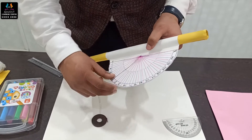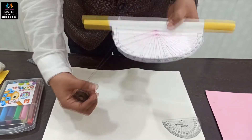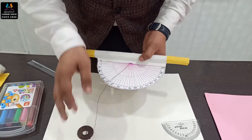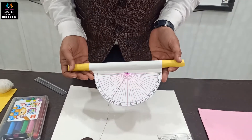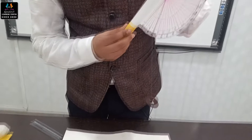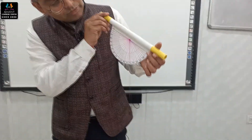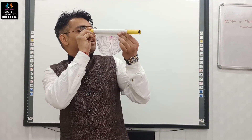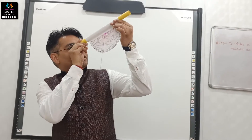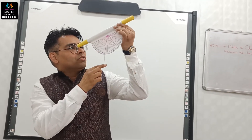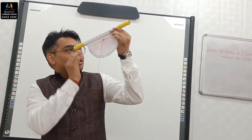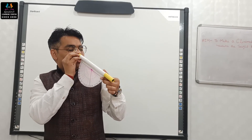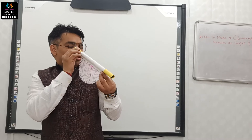With the help of thread, suspend a weight at the nail. By this arrangement, you can get your clinometer. You can see your object and measure the angle. If the angle is upward, the thread moves towards your side. And if the angle goes downward — if you are looking at an object from top to bottom — the thread moves to the other side.